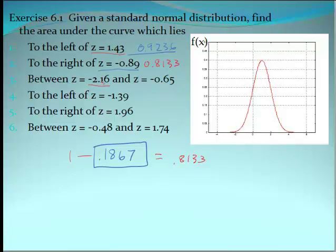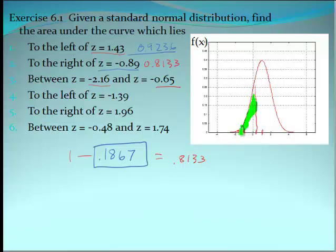Number 3: z is between −2.16 and −0.65. Both of those values are to the left of center. The z-table value for −2.16 gives us that left tail area, and the table value for −0.65 gives a bigger area. All we have to do is find those two areas, subtract the little one from the big one, and we're done. Notice the green area also includes the previous tail area, but we'll subtract that out.